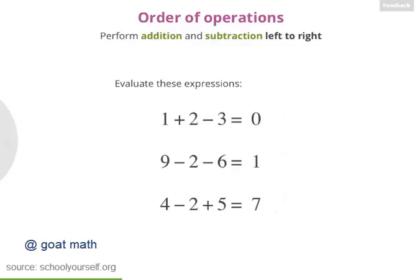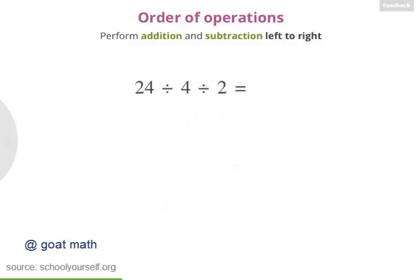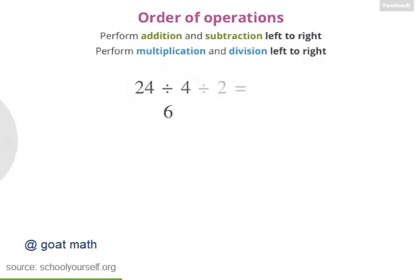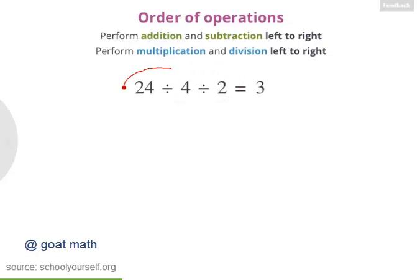So what about other operations, like multiplication and division? Suppose you have this expression: 24 divided by 4 divided by 2. Just like with addition and subtraction, you should also perform multiplication and division from left to right. So first, you'd evaluate 24 divided by 4, which gives you 6. Then you have 6 divided by 2, or 3. So this expression equals 3.